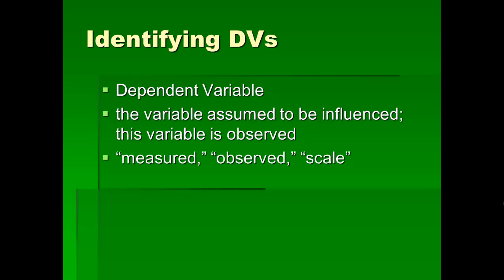Another type of variable in experiments is the dependent variable — the variable assumed to be influenced by the independent variable, or it may be. This variable is not manipulated but just observed. In our example, what's being observed is the subjects' behavior on the playground — the number of aggressive acts — and that's our dependent variable. We believe violent cartoons cause aggression in children, so what's being influenced is aggression. Words to look for: 'we measured this,' 'we observed this,' or 'we gave the subjects a scale' more often than not indicates a dependent variable.